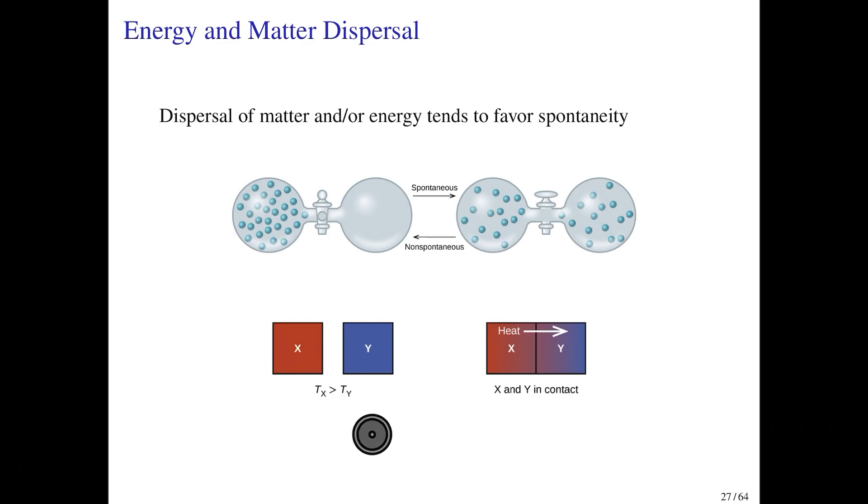Block X is at a higher temperature than block Y, and so the molecules within block X are moving around faster than the molecules within block Y. If you bring these two blocks into thermal contact—that is, if you let them touch one another—what will happen spontaneously is that energy will flow, thermal energy will flow from the hot object to the cold object, and eventually both objects will be at the same temperature. That happens spontaneously on its own.